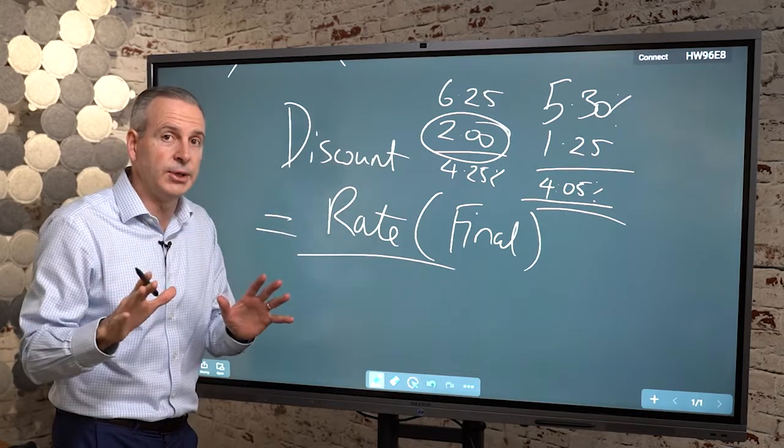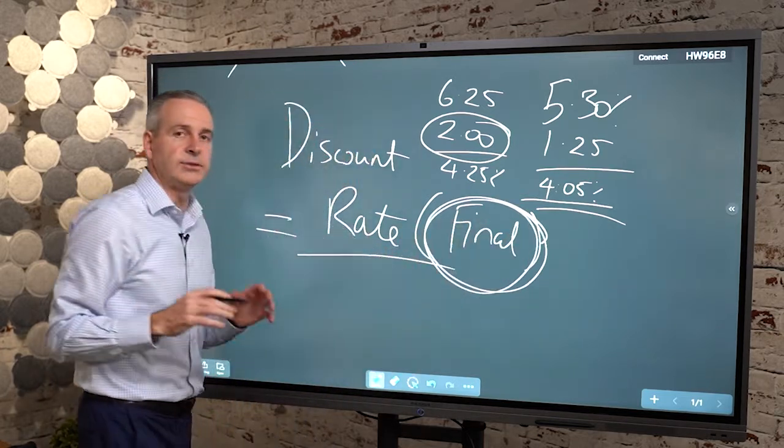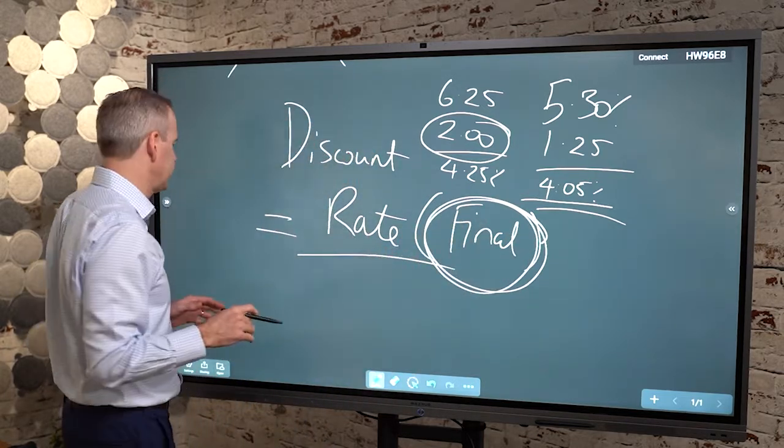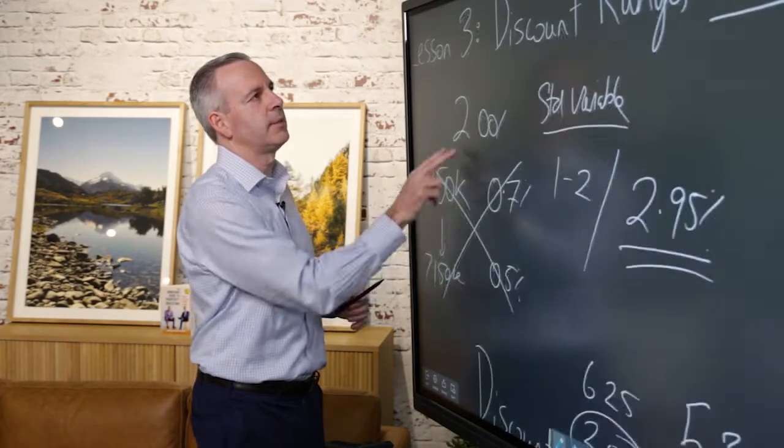Discounts can be misleading. Ultimately, it's the final rate that you pay that's going to be what value you get. So that is an important lesson in terms of lesson number three. Let's go over now and have a look at lesson number four.